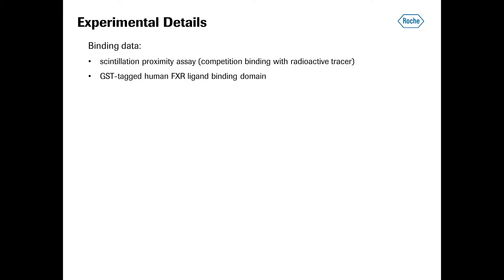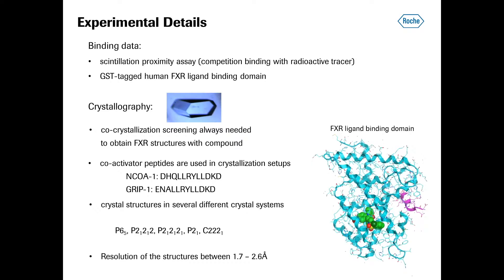Some experimental details. The binding data were obtained using a scintillation proximity assay, which is a competition binding assay using a radioactive tracer molecule. FXR is a nuclear hormone receptor, which contains DNA and ligand binding domain. The binding assay and crystallography was done with the ligand binding domain only. For binding, we used a GST-tagged version of the ligand binding domain.